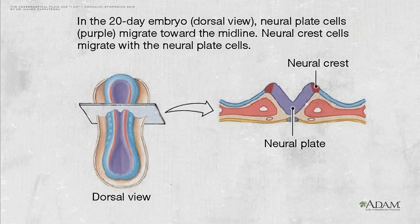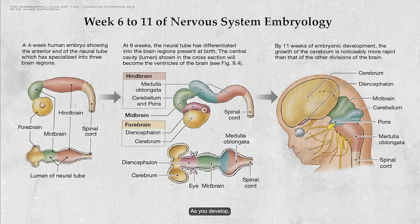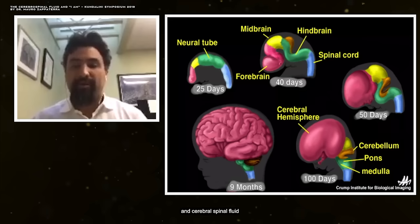Initially, your embryonic brain is a hollow, fluid-filled vesicle with cerebrospinal fluid on the inside of the tube and amniotic fluid on the outside of the tube. As you develop, the brain and spinal cord enlarge and differentiate, and cerebrospinal fluid continues to bathe the inside and outside of your entire central nervous system.